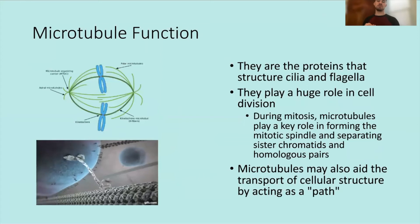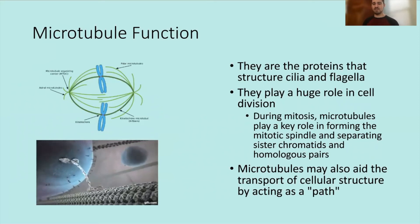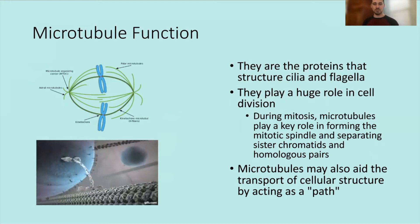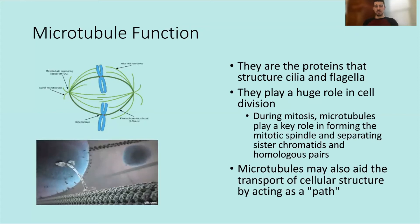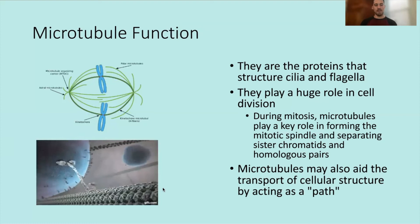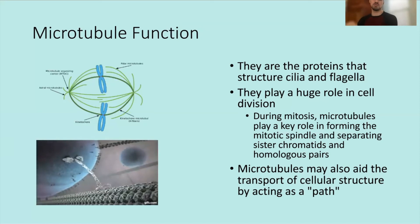Microtubules structure cilia and flagella and play a huge role in cell division — they form the mitotic spindle and separate sister chromatids, and can also separate homologous pairs during meiosis. Microtubules may also aid transport of cellular structures by acting as a highway. Motor proteins known as kinesins can carry substances along microtubules throughout the cell.